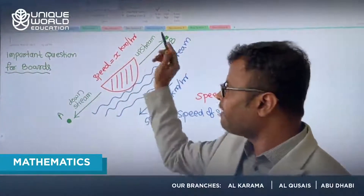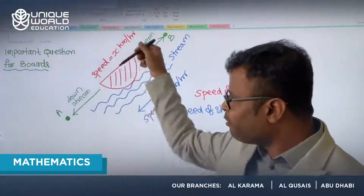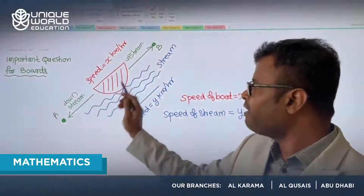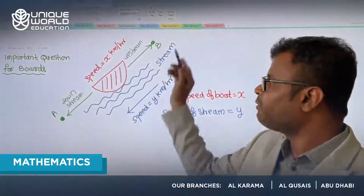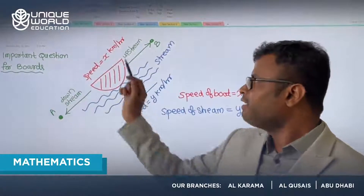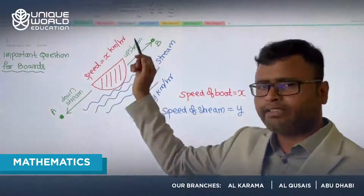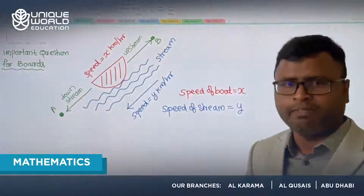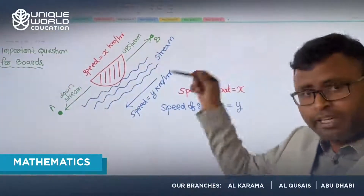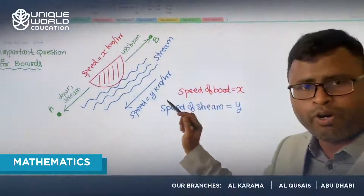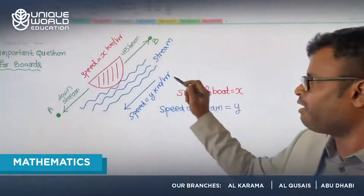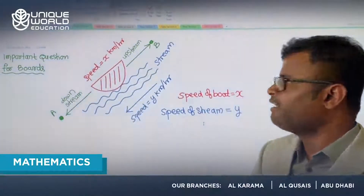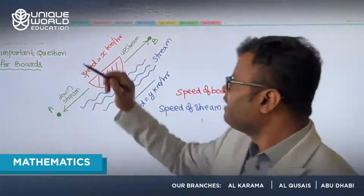When the boat goes down we call that situation downstream; when the boat goes up we call it upstream. The speed of the boat is x km/h as before, and the speed of the stream flowing downward is y km/h. So we now have two speeds: speed of the boat and speed of the stream.